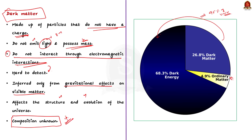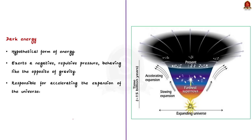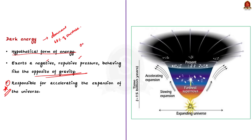Now let us see the second phenomenon: dark energy. Dark energy is a hypothetical form of energy that exerts a negative repulsive pressure, behaving like the opposite of gravity. It is responsible for accelerating the expansion of the universe. Dark energy is a far more dominant force compared to dark matter, and it accounts for 68% of the universe's total mass and energy. Similar to dark matter, dark energy also cannot be directly observed, but is inferred from the observation of gravitational interactions between various astronomical objects.